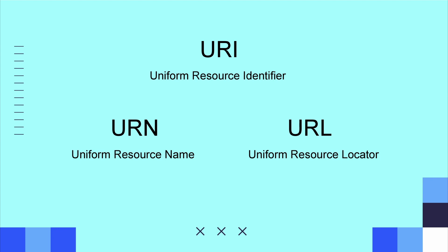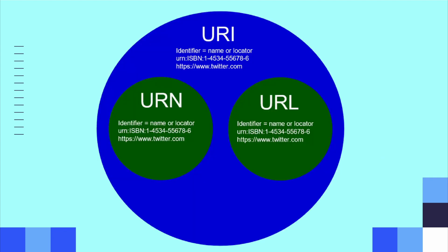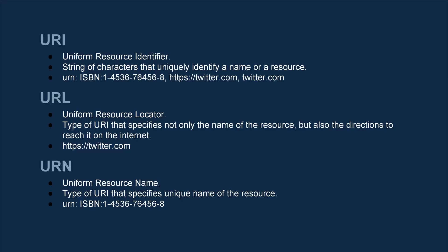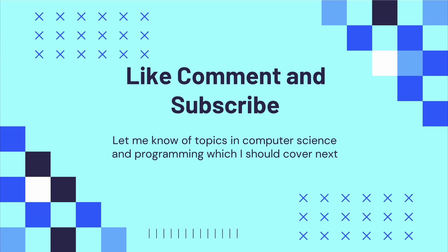It is always good to know the difference between URL and URI. To sum it up: URN and URL are subtypes of URI. URN is just the name, while URL is the locator. URN is just a unique identification, while URL is a unique identification with a pathway or directions to reach the identifier. Remember, if an item is a URL or a URN, by definition it is also a URI, as both URN and URL are subtypes of URI. If you are certain, always try to use URL instead of URI, as URL is more precise and removes the ambiguity that can occur when saying URI.